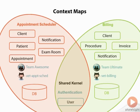Using a shared kernel is a tradeoff between code reuse and consistency, and the overhead involved in integrating changes to the shared kernel across multiple teams and bounded contexts. It works best when the shared model is relatively stable.